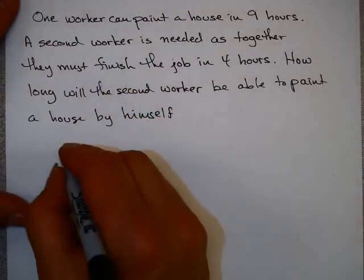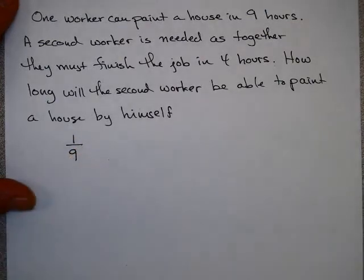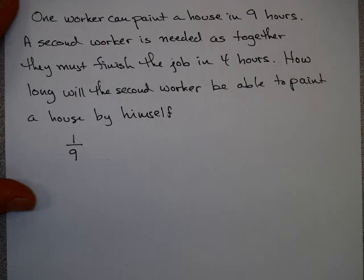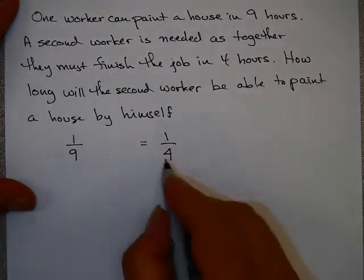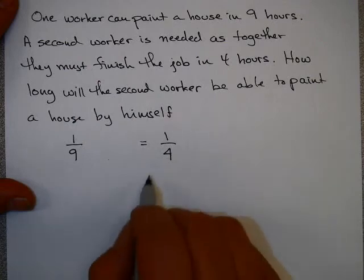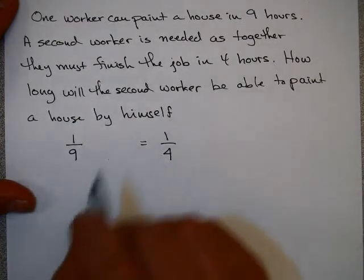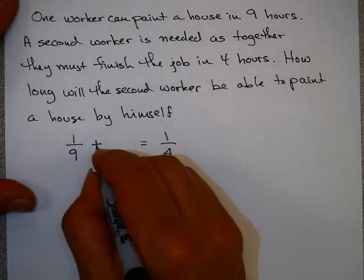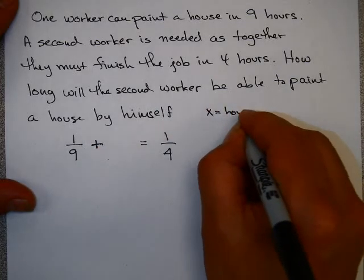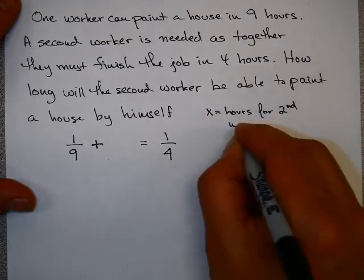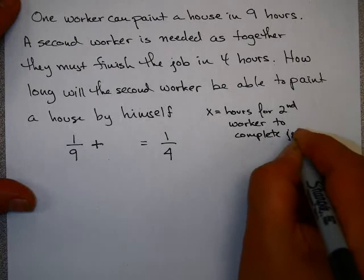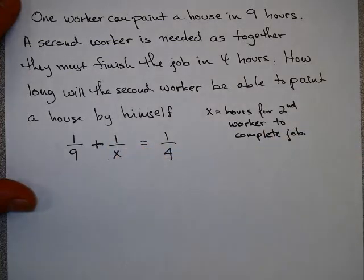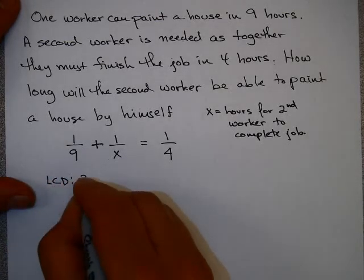One worker can paint a house in nine hours, so their rate of work is 1/9. A second worker is needed as they must finish the job in four hours. So together, they have to finish the job in four hours. So the rate of work that combined together they have to be is 1/4. The second worker, we don't know how long it takes him, but let's just say it takes him x hours for the second worker to complete the job. So his rate of work is 1/x. Here we have another rational expression, a rational equation, pretty easy to solve.